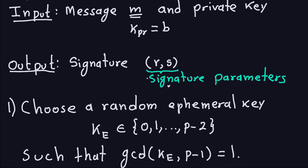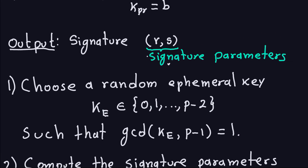The first step is to choose a random ephemeral key k_e — the same definition of ephemeral key as in the ElGamal encryption. It's a number between 0 and p-2, where p is the large prime chosen at the beginning. It has to be random, but it also must satisfy the property that k_e and p-1 do not share any common factors, i.e., gcd(k_e, p-1) = 1.